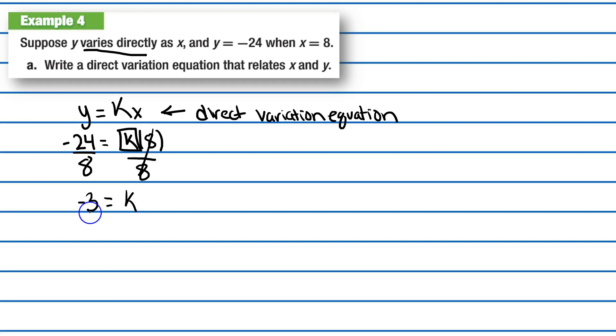But we're not done - we just found out what k is. Now we need to plug it back into our original equation, y equals kx, because we wanted a direct variation equation. So y equals k, which is negative 3, times x. This is your direct variation equation that relates x and y.